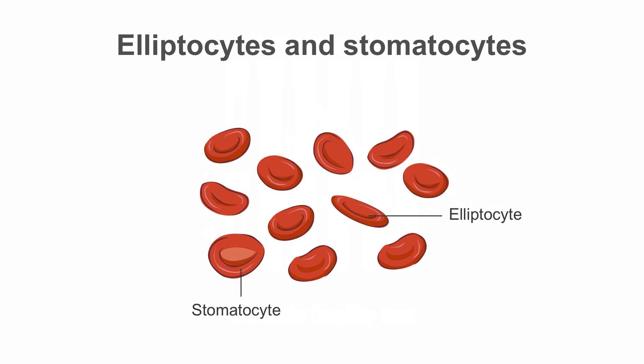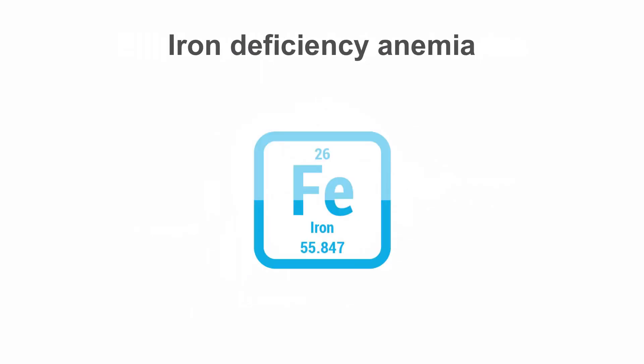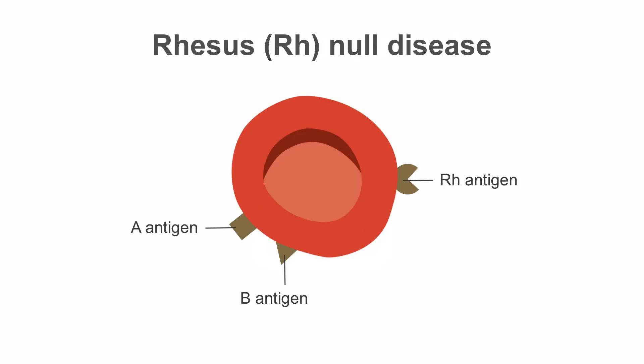Elliptocytes and stomatocytes: individuals with increased elliptocytes in their peripheral smear may have hereditary elliptocytosis, and individuals with increased stomatocytes in their peripheral blood may have hereditary stomatocytosis. Other than hereditary elliptocytosis, elliptocytes may also be seen in iron deficiency anemia. Other than hereditary stomatocytosis, stomatocytes may also be seen in individuals who do not possess the Rh antigen on their red cell surface, called Rh null disease.